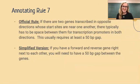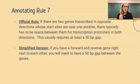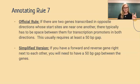The seventh rule reads: if you have a forward and reverse gene right next to each other, you'll need a 50 base pair gap between the genes. If you have a switch between forward-reading and reverse-reading genes, you need a 50 base pair space in between so that something called the promoter can do its job. You'll need a 50 base pair gap between the first forward and reverse genes, and another 50 base pair gap after the reverse genes and before the next forward genes.